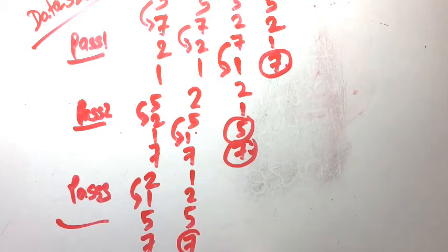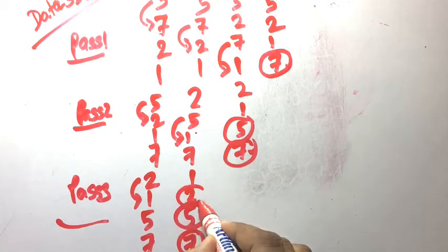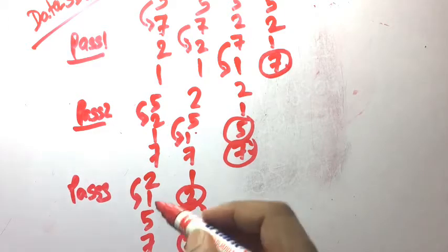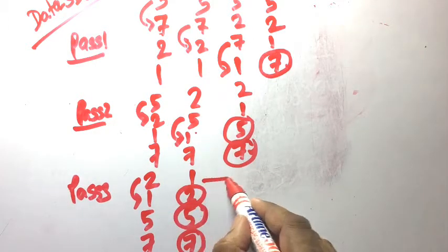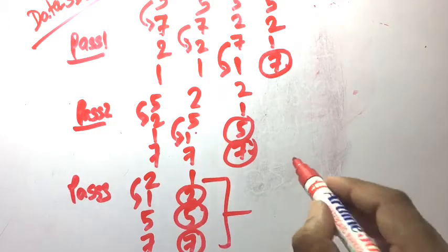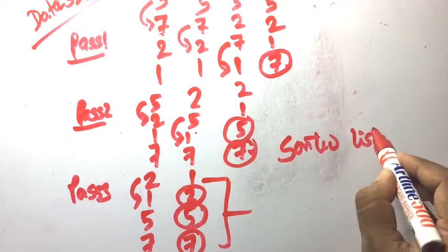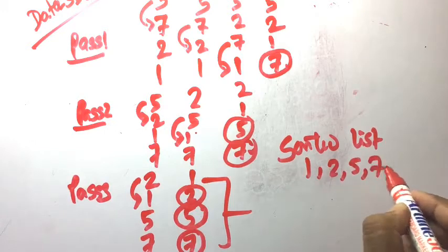In pass 3, after further comparisons, 7 was sorted in the first pass, 5 was sorted in the second pass, 2 was sorted in the third pass. Now 1 is the only remaining number and the array is already sorted. The sorted list is 1, 2, 5, and 7.